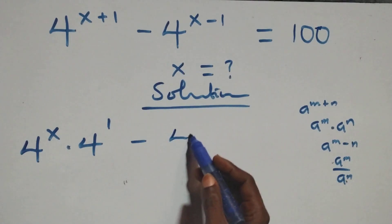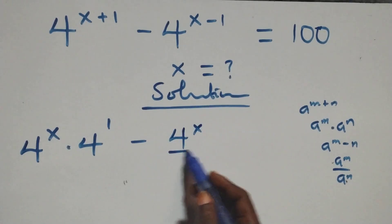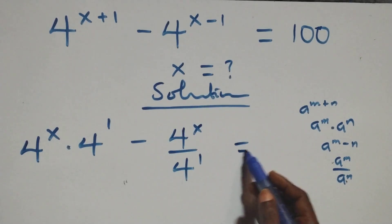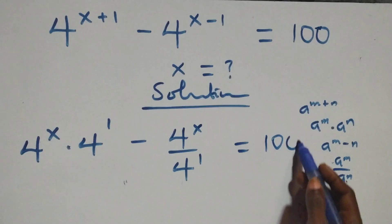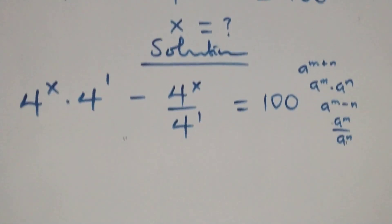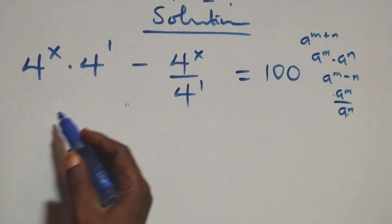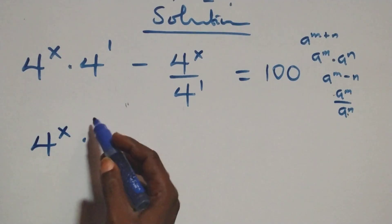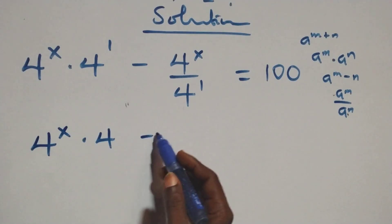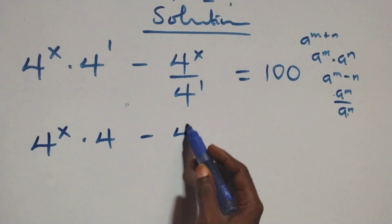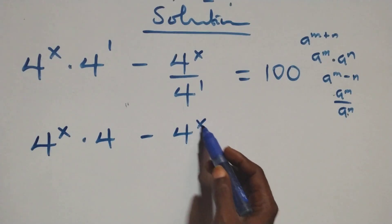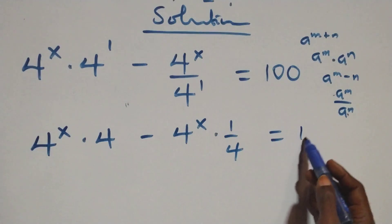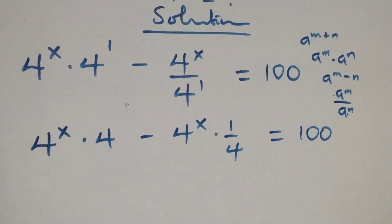At this here we have 4 raised to power x over 4 raised to power 1 equals to 100 on this side. We can rewrite this as 4 raised to power x times 4 raised to power 1, and here we have 4 raised to power x times 1 over 4, then equals to 100 on this side.